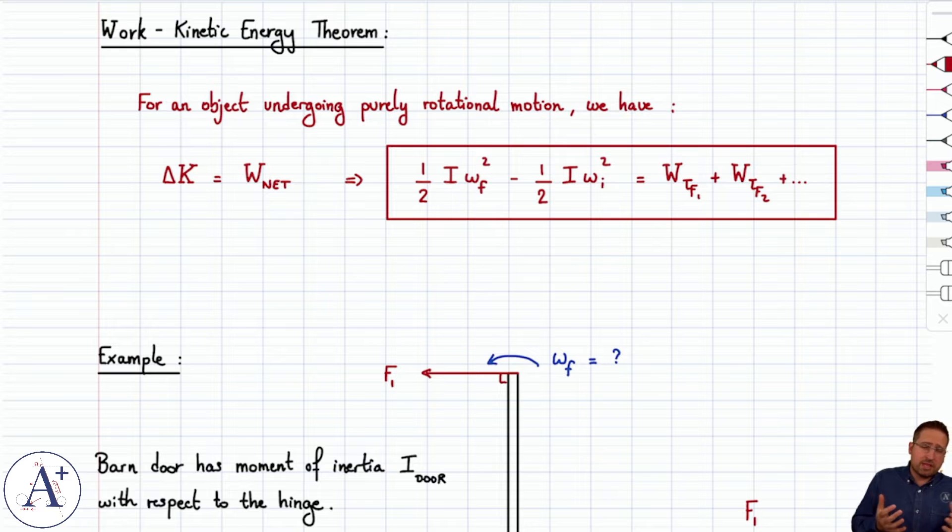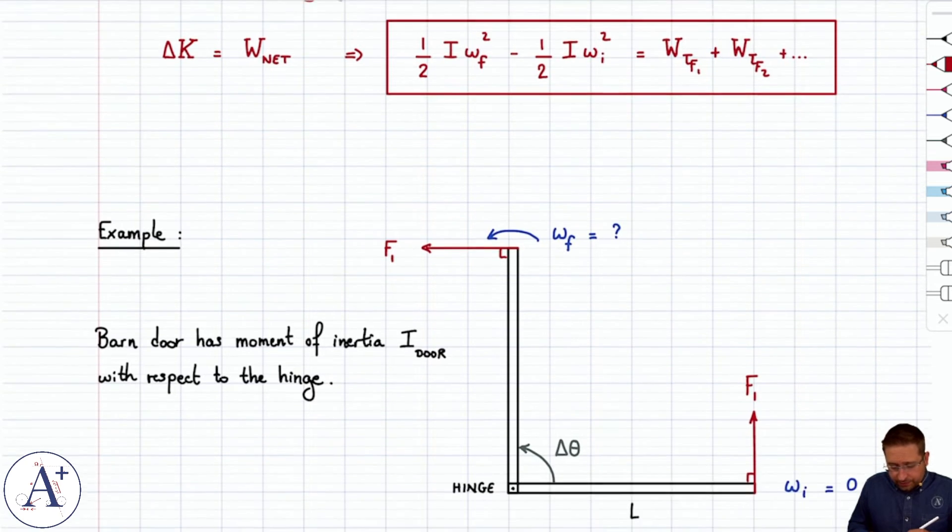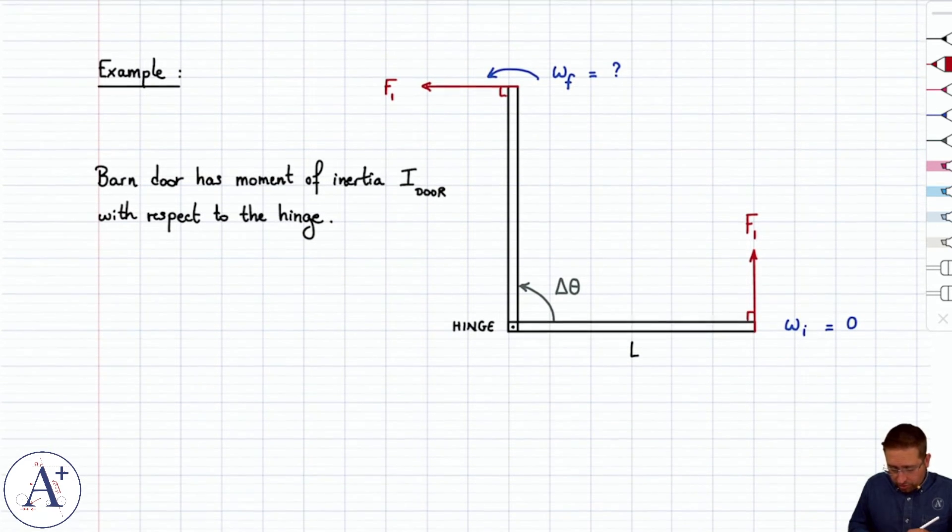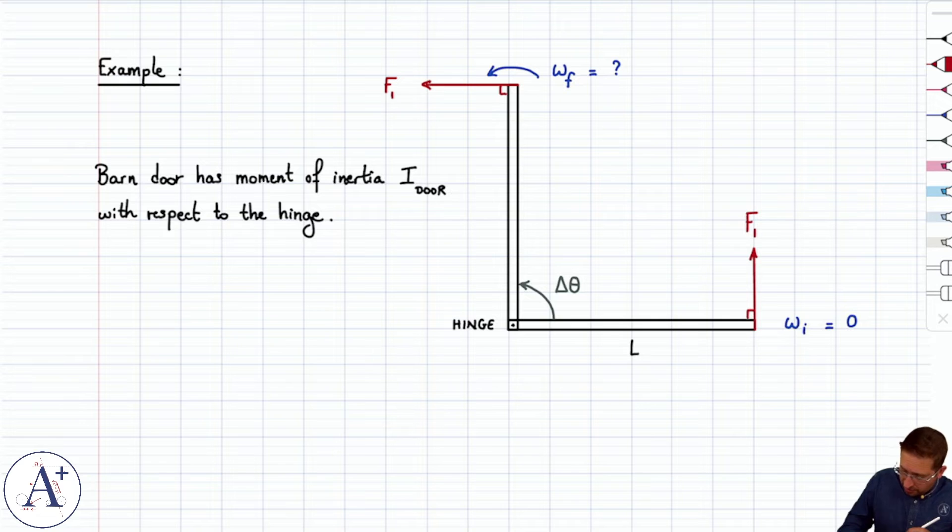It's the same statement, you just have to be careful what type of motion you have so that you use the proper quantities on the left and the right-hand side. Let's see how that works on a simple example. Let's consider this barn door here viewed from above, and it's hinged on the left-hand side, and you are going to open it by pushing with the force F1 on the right edge of the door, and you follow through. You walk with the door as you apply the force F1.